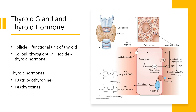Let's start with the thyroid gland and thyroid hormone. The thyroid is made of multiple follicles, which are the functional units of the thyroid. Within each follicle is a colloidal area, where thyroglobulin and iodide come together to make thyroid hormone. We have two types of thyroid hormones: T3, which is triiodothyronine, and T4, which is thyroxine. While T4 is the most abundant thyroid hormone in the blood, T3 is more potent.